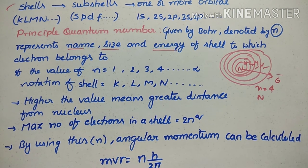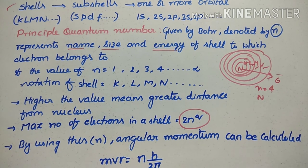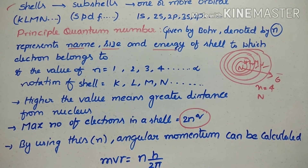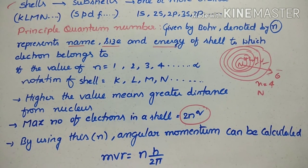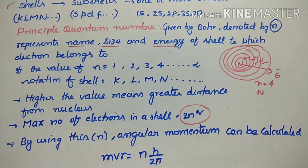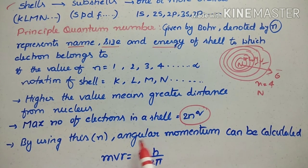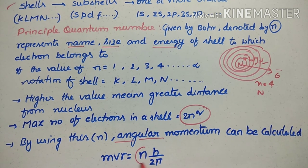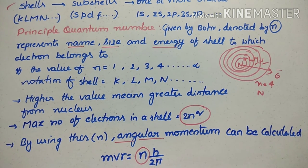The maximum number of electrons in a shell is given by the formula 2n². This is a mathematical solution. Additionally, using the n value, you can determine the distance, energy, and size of the shell, and the angular momentum of the electron can also be calculated using the n value. These are the key points regarding the principal quantum number.